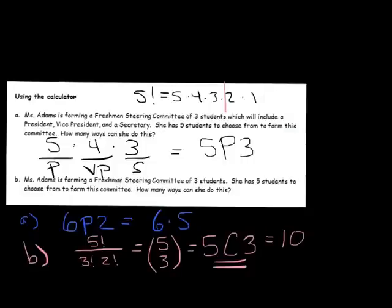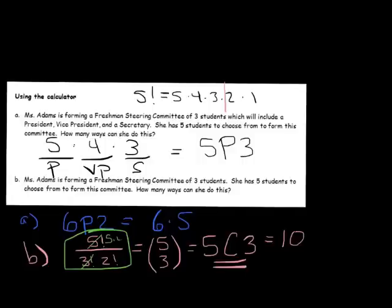Some problems will be small enough where you can do things out by hand. You could simplify this by hand without too much problem. 5 factorial is 5 times 4 times 3 times 2 times 1, and 3 factorial is 3 times 2 times 1. So the 3, 2, 1 would cancel with the denominator, leaving just 5 times 4 on top. So you essentially have 20 on the top divided by 2, which gives you your 10. But sometimes the computations are just a little bit out of control, so we use the calculator.